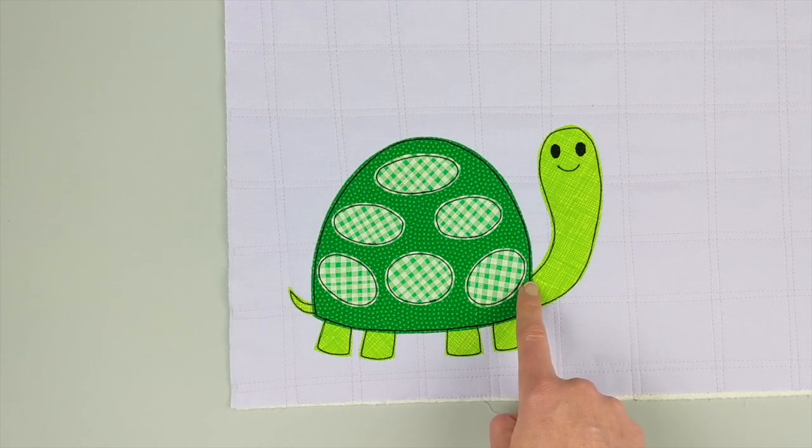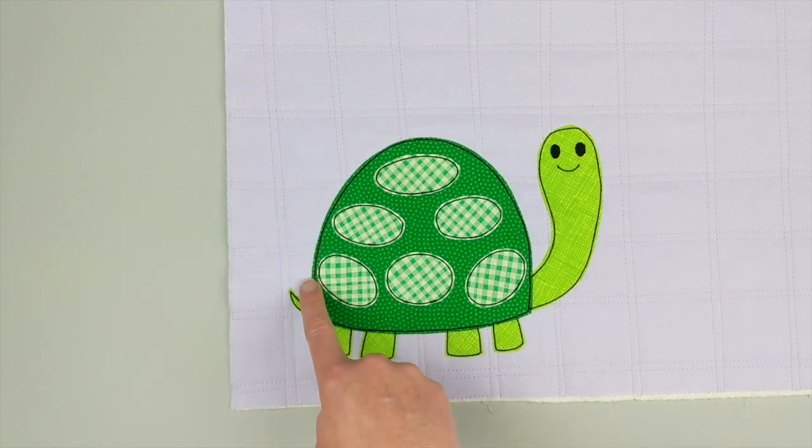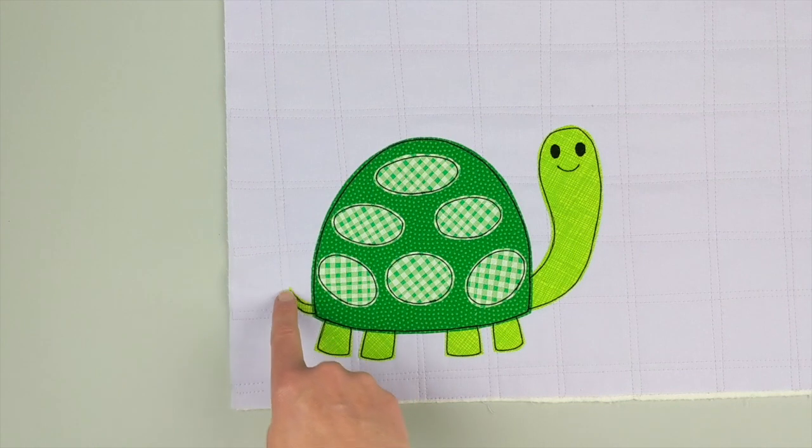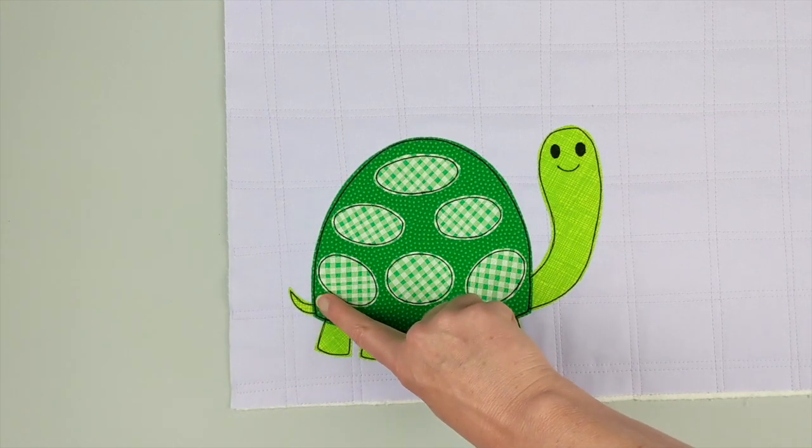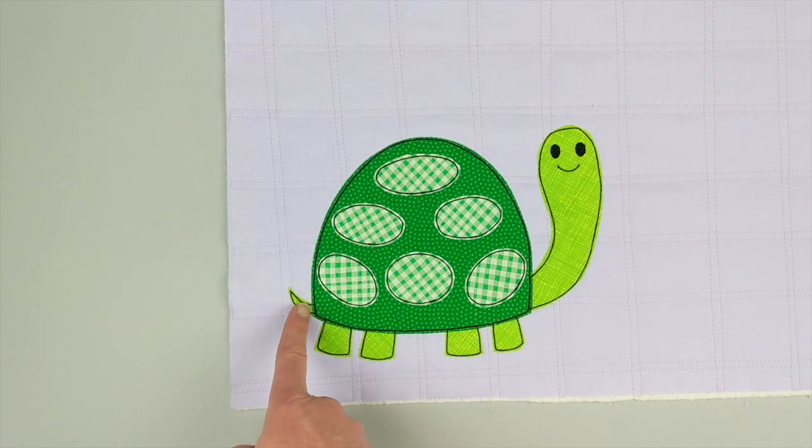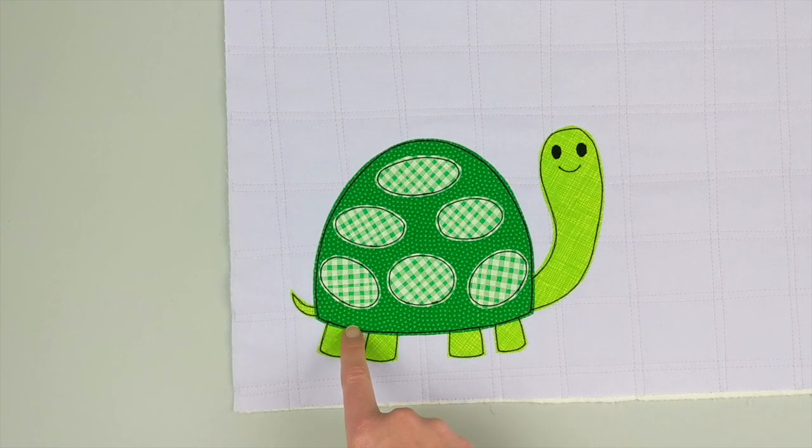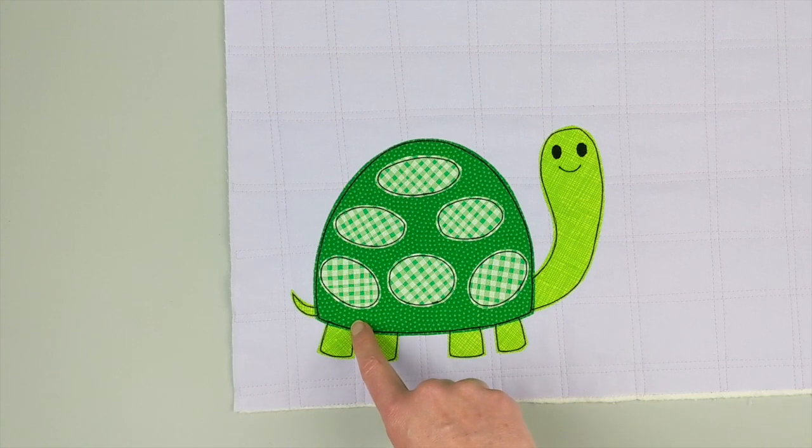I went around once, and then on my second pass around is when I stopped and detoured to do the tail and the legs. So I went around a second time, went past the edge of the tail to the bottom edge of the tail, and then I went one, two, three.